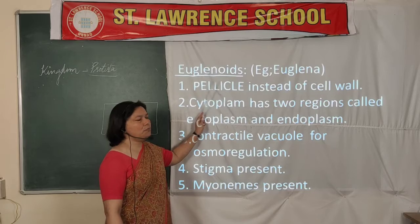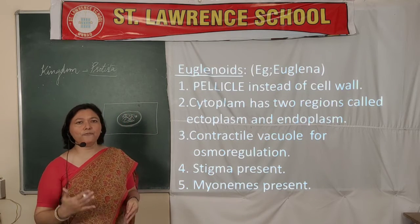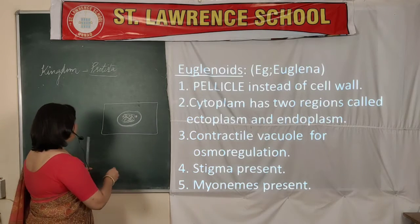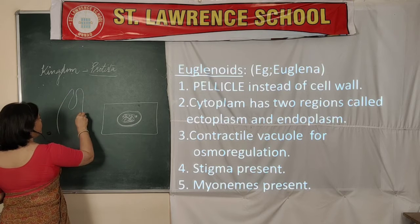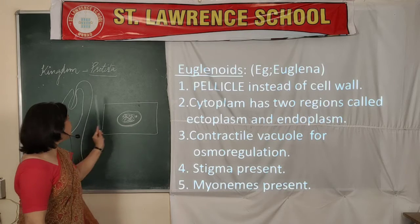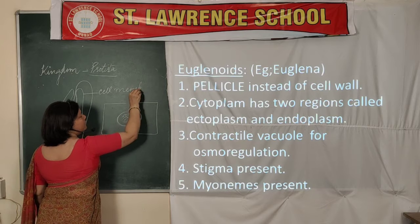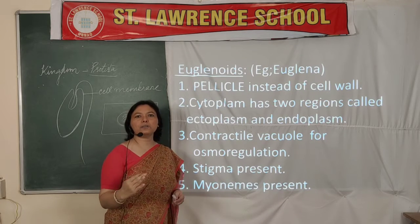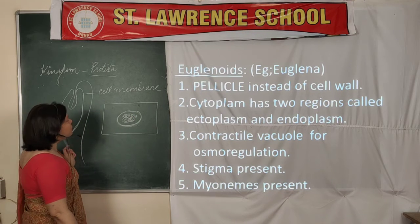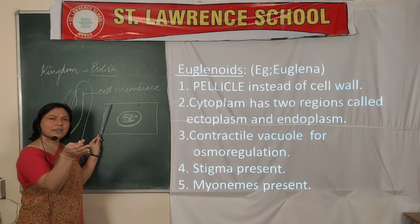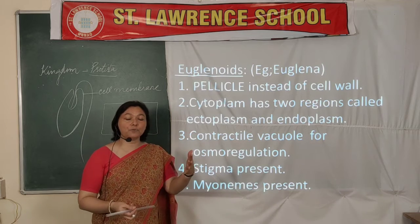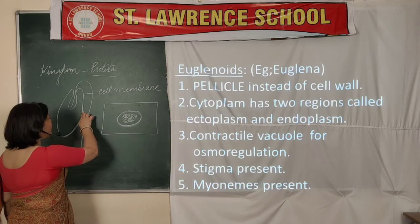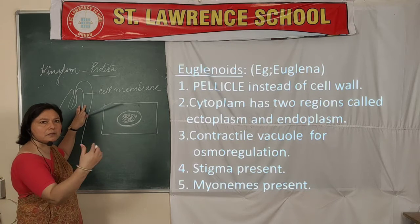The third category is Euglenoids, named based on the example Euglena. The very characteristic feature is that Euglena has a cell membrane as the outermost layer, not surrounded by a cell wall. That is why it is not considered a plant. The presence of only a cell membrane gives it an in-between appearance of plant and animal, so we call it a link between plants and animals.